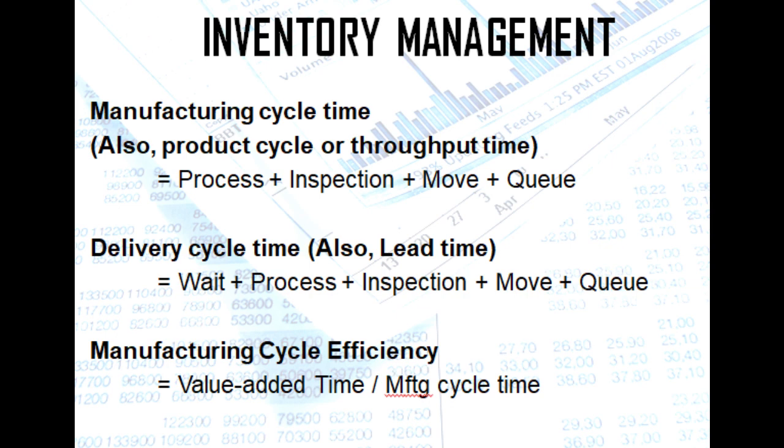Manufacturing cycle time, also known as product cycle or throughput time, is computed as: process time plus inspection time plus move time plus queue time. Delivery cycle time, or lead time, is: wait time plus process time plus inspection time plus move time plus queue time. Among these five types, only process time is value-added. We compute manufacturing cycle efficiency, or MCE, as: value-added time divided by manufacturing cycle time.